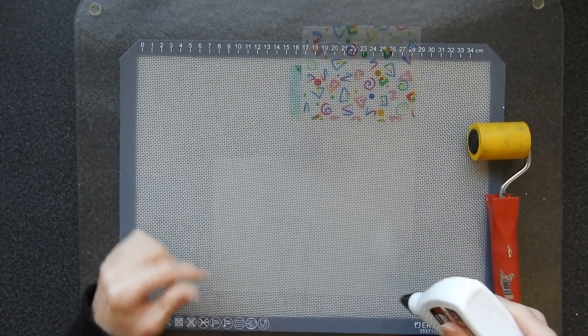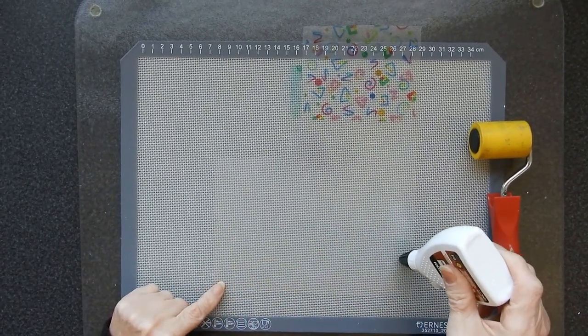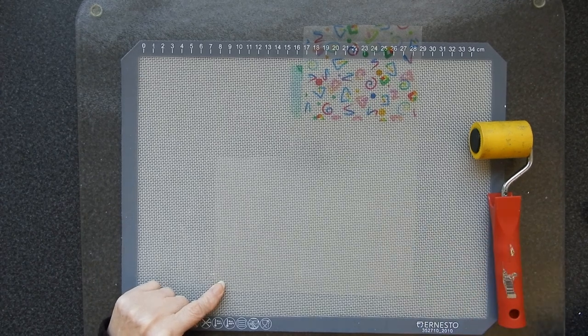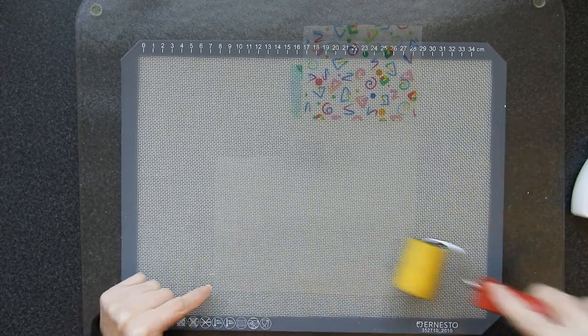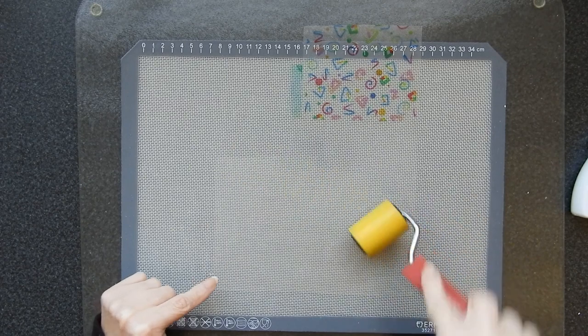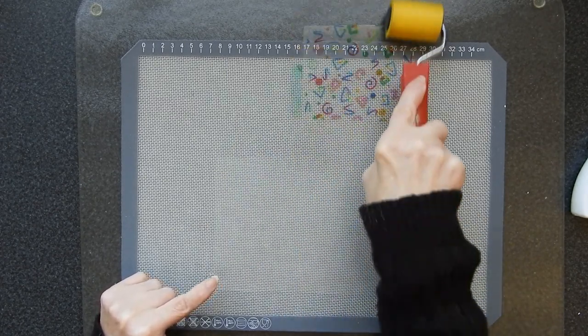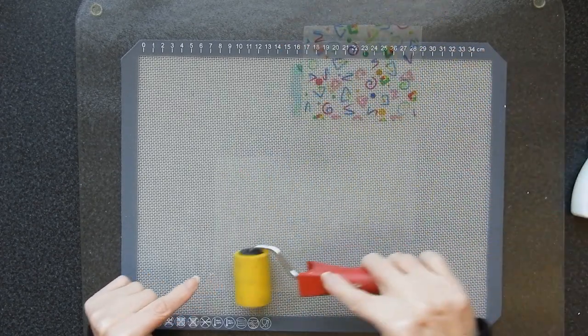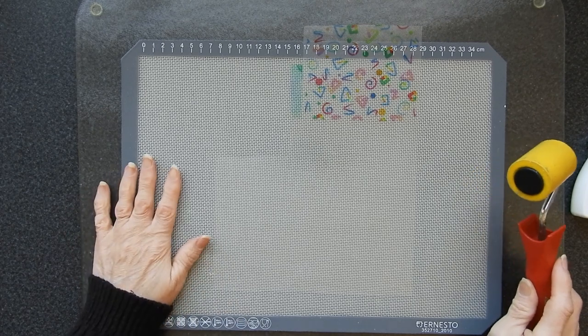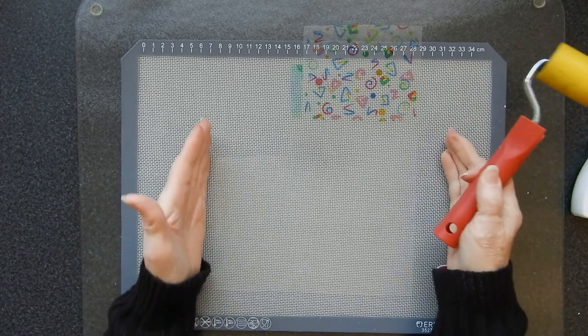You apply a couple of lines of the PVA glue to one edge. Use the roller and just roll it all over until you have your surface covered. Now I recommend doing it on a silicone mat or something because you're going to get glue around the edges.